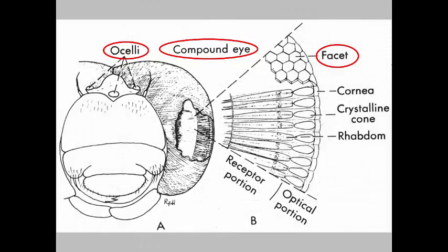Most insects have conspicuous compound eyes that are able to form a mosaic-like image. Each compound eye is made up of a grouping of individual facets, each of which detects light. Compound eyes are not as acute in vision as our eyes, but are very good at detecting motion. We will cover the details of compound eyes in a later lecture. Most insects also have simple eyes called ocelli, which cannot form an image but can detect light and dark. Some insect larvae do not have compound eyes, but possess lateral, ocelli-like light receptors called stemmata.